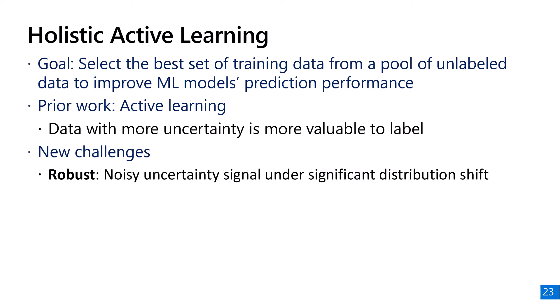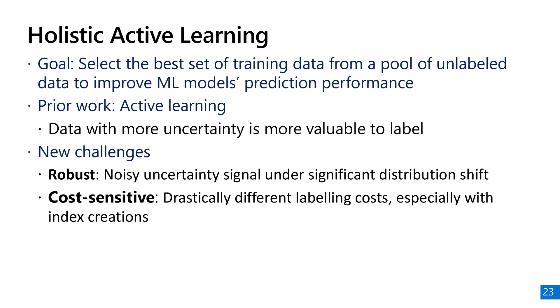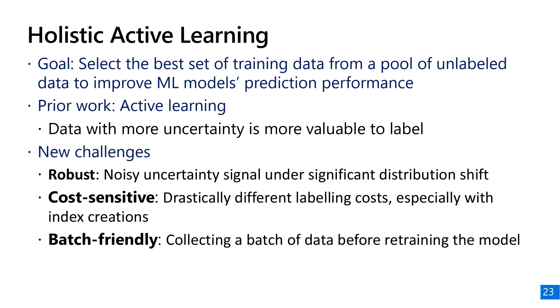In most prior active learning work, the cost of data labeling is uniform. In index tuning, the data is query execution cost, which can vary significantly across queries. Additionally, the cost of acquiring data includes the cost of implementing indices, which should be amortized among all queries that leverage the index. Finally, prior active learning work often relies on retraining after every data point — since retraining is expensive, we want to retrain only after collecting a batch of data points.